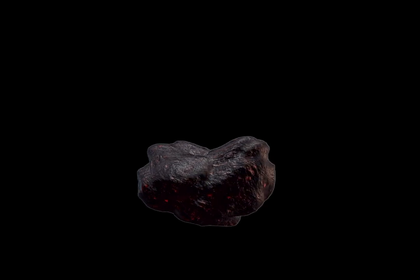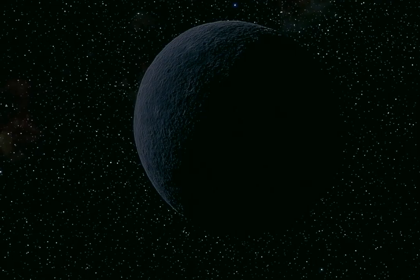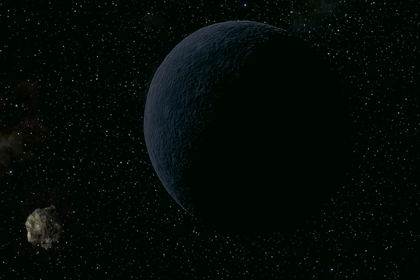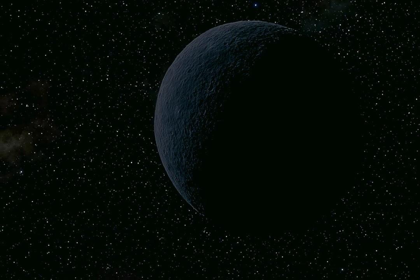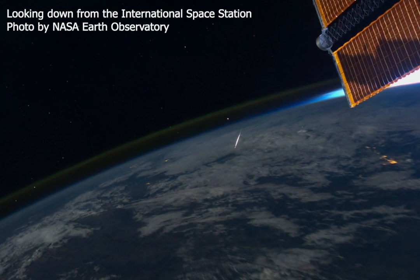Every meteor starts out as a meteoroid, a piece of rock falling toward our planet. Most meteoroids are very small, perhaps a few centimeters across. This one has been touring the solar system for millions of years, ever since it was kicked out of the asteroid belt between Mars and Jupiter. Its long journey is about to come to a fiery end.